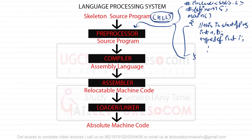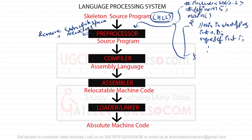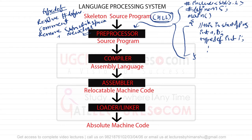You give this entire high-level language program to a preprocessor. The responsibility of the preprocessor is to preprocess the program before giving it to the compiler. The preprocessor removes all extra white spaces from the program, removes newline characters, removes comments, and resolves all the hash define statements and type definition statements.